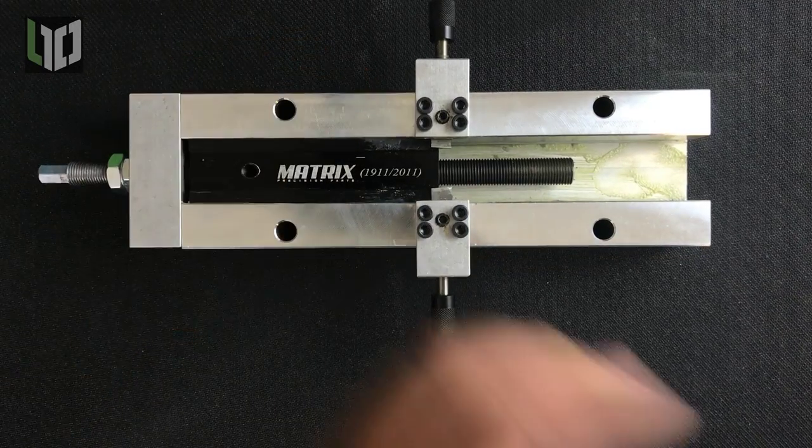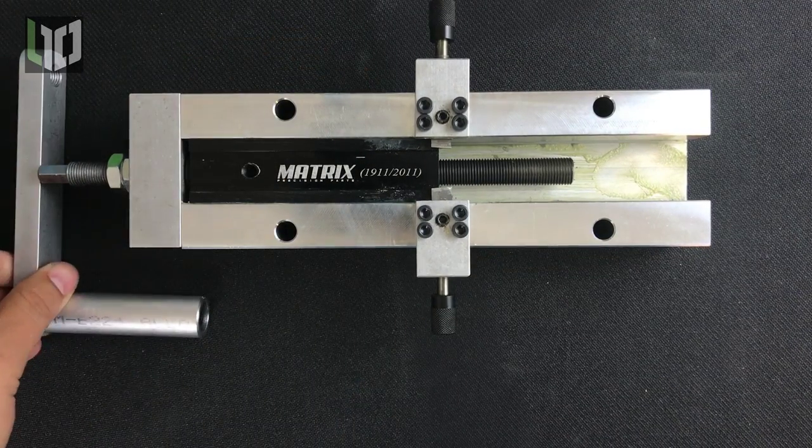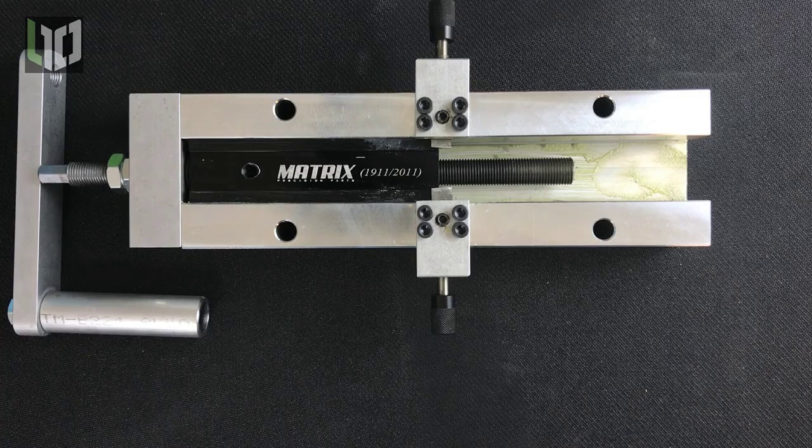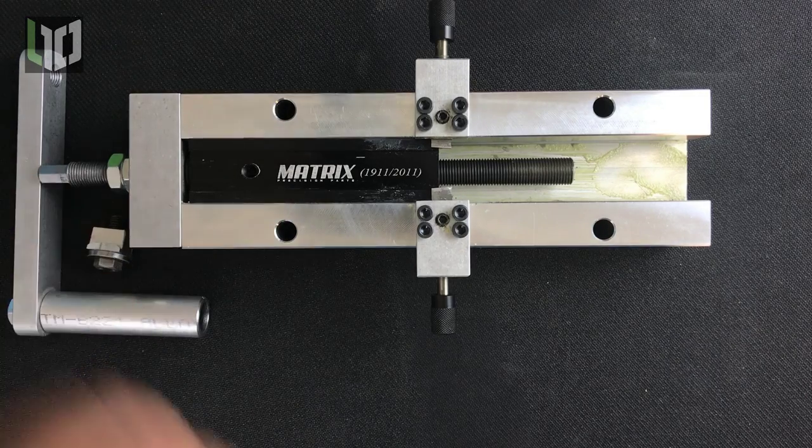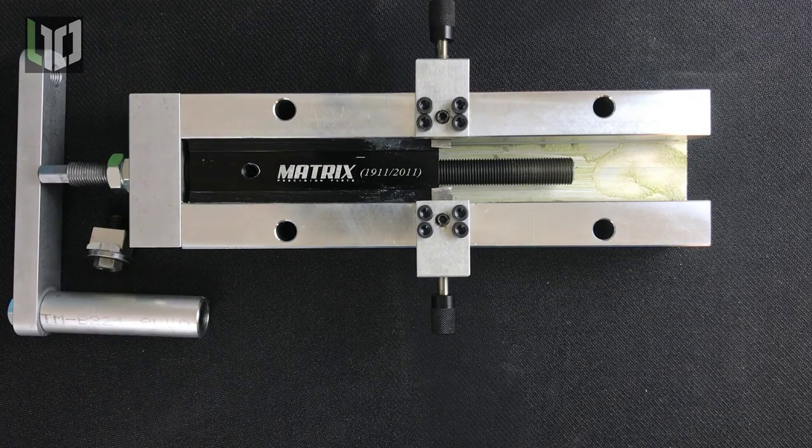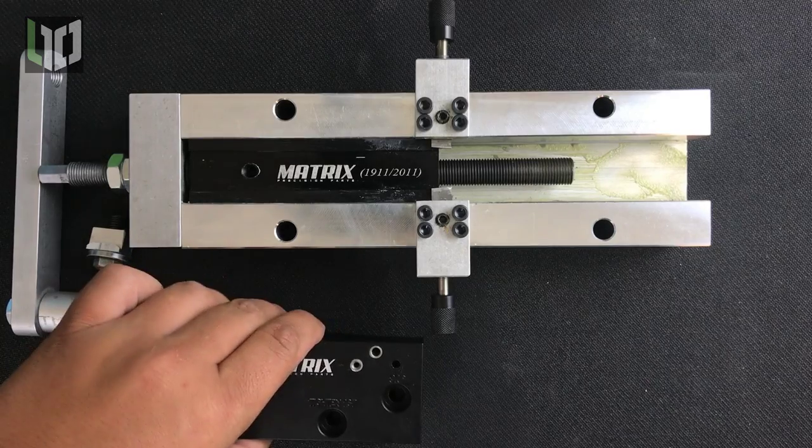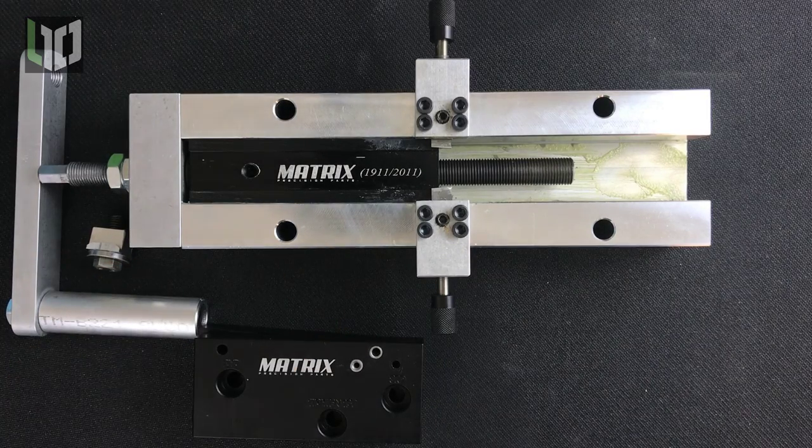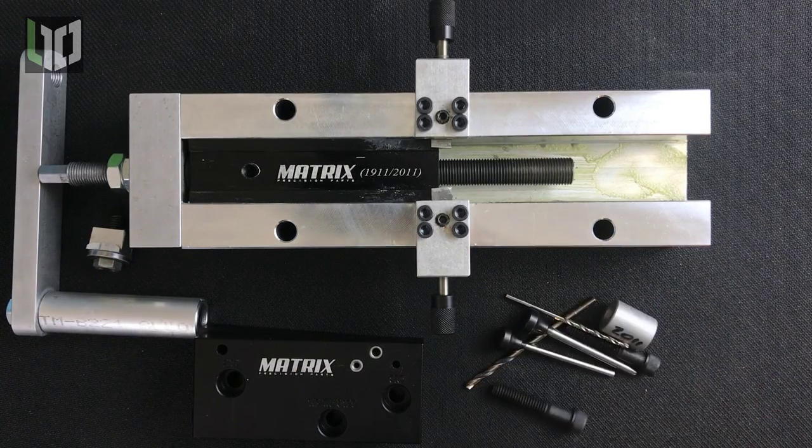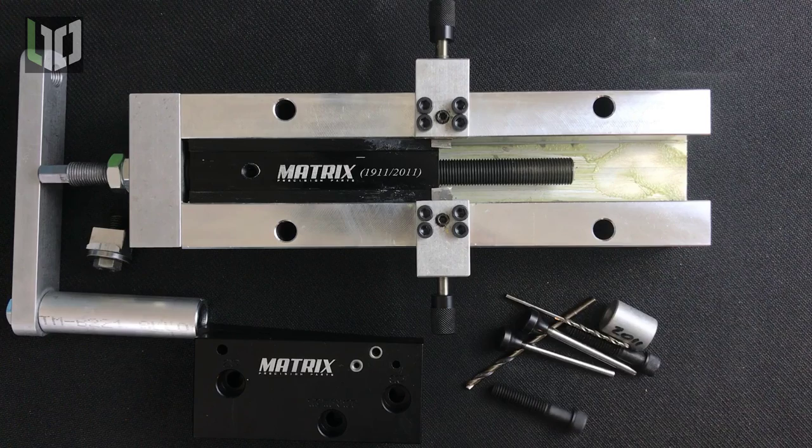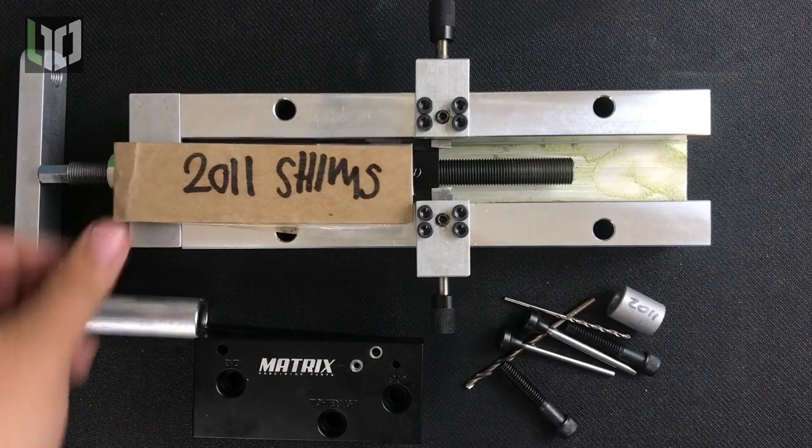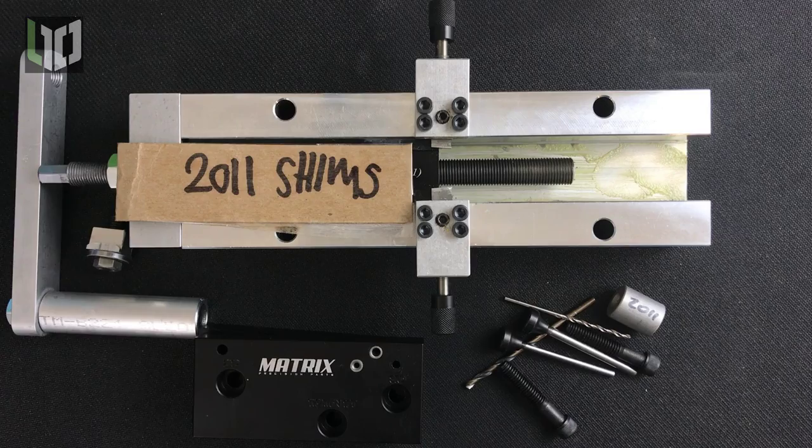Here's what's included. The rail cutting car, the rail cutting handle - I opted to use a drill instead of the handle which I'll show later - fasteners for securing your frame to the car, the matrix hole drilling jig, and included with the jig are proper drill bits and guides for drilling your hammer and sear pin holes. As an option you can order shims used for 2011 style frames, but based on my testing I don't think these are necessary.